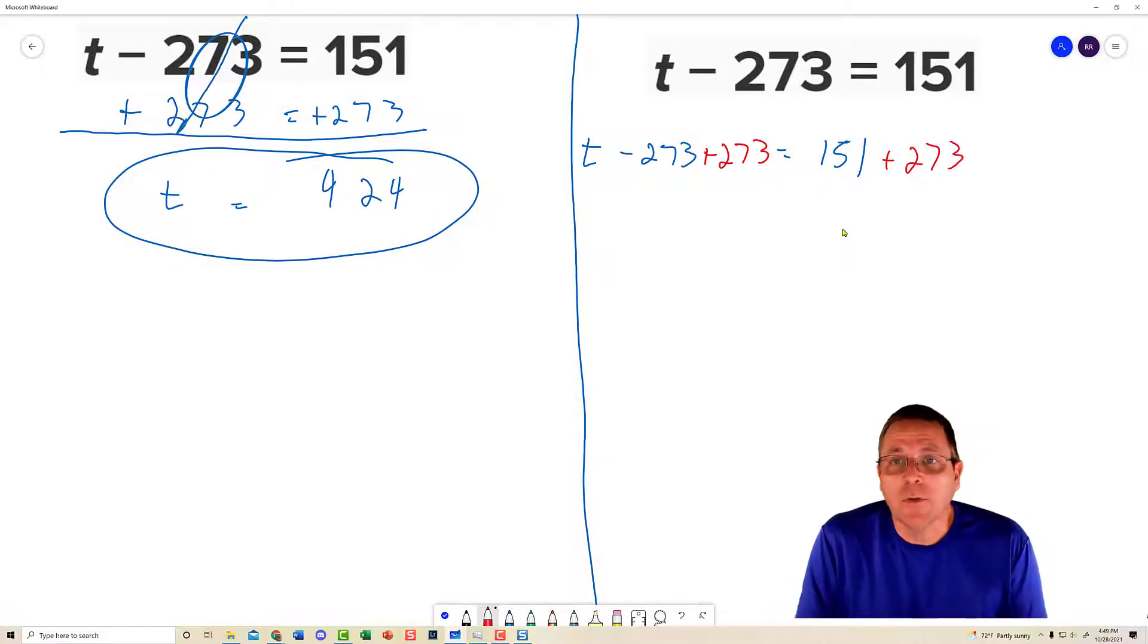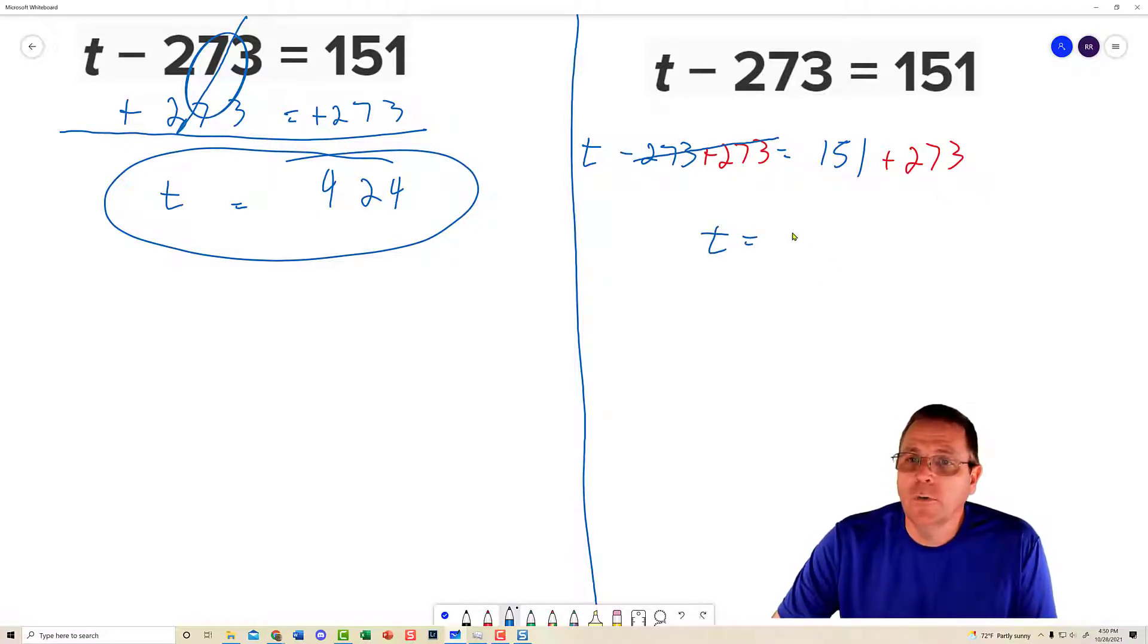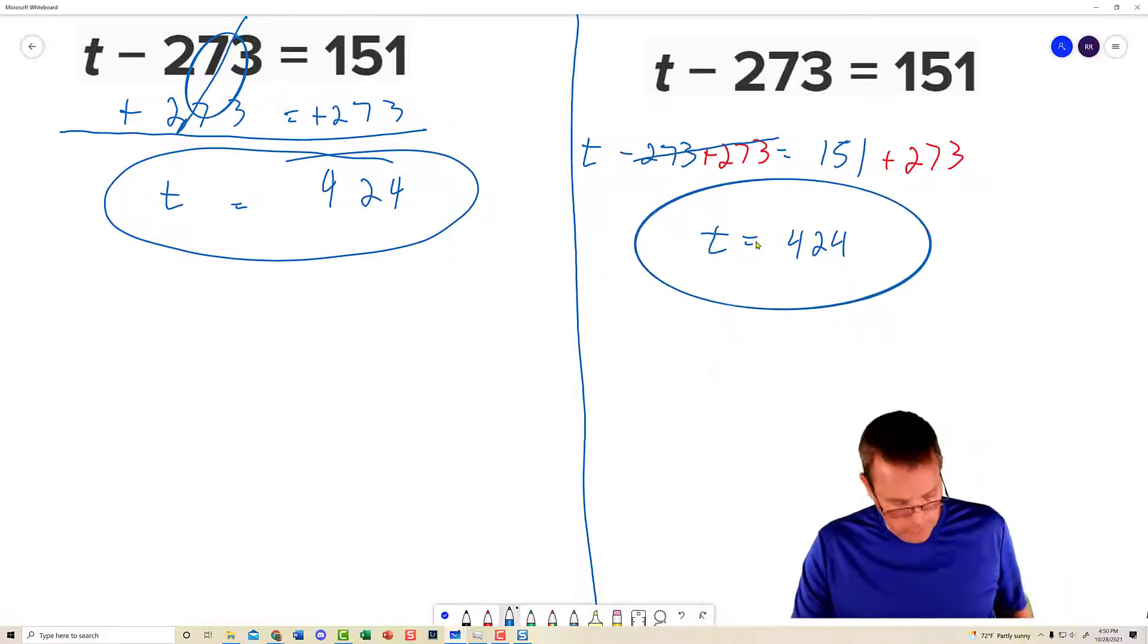Equals 151. And then back to red. Plus 273. And you can see there that the blue part, that's just your original equation. The red part is the only thing that's different. And I'm doing the same exact thing on both sides of the equation. Now just like last time, these are going to zero each other out. So we're going to put a line through them. And then we're going to say t is equal to. Add them up. You're getting the same 424 that you got the other way.